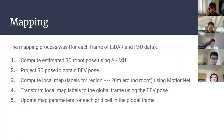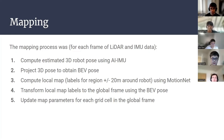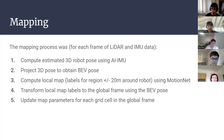The mapping part of the project fuses the MotionNet output and the AI-IMU output. For each frame of LiDAR and IMU data, we compute the estimated 3D pose using AI-IMU, then perform projection to obtain the bird's-eye view pose. We pass the LiDAR data into MotionNet to obtain a local map, then perform coordinate transformation to obtain global map labels from the local map using the bird's-eye view pose, and update the map parameters for each grid cell on the global frame, similar to homework 4.